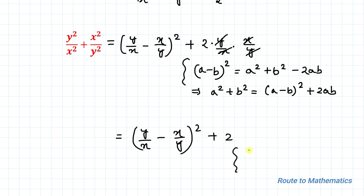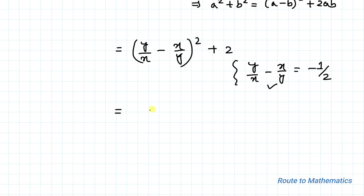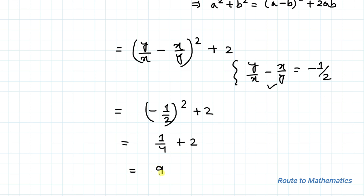From equation 1, y/x minus x/y equals -1/2. Substituting, we get (-1/2)² + 2, which equals 1/4 + 2. Taking LCM, our answer is 9/4.